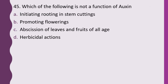Question 45. Which of the following is not a function of auxin? Initiation of rooting in stem cuttings, promoting flowering, abscission of leaves and fruits of all ages, or herbicidal action. The correct answer is option C — abscission of leaves and fruits of all ages is not a function of auxin.